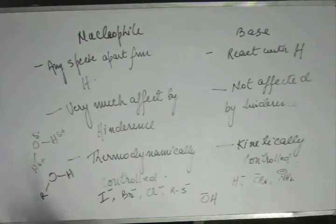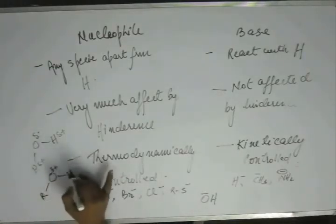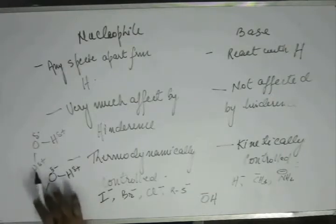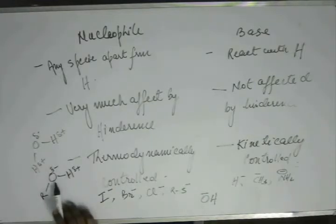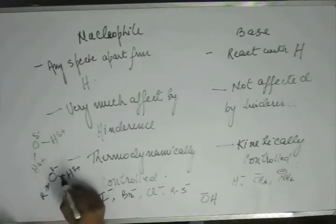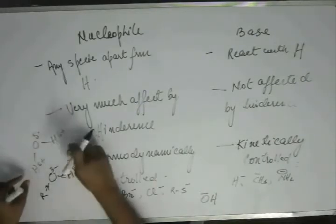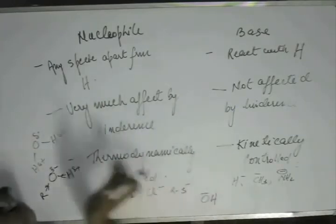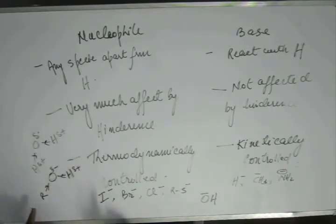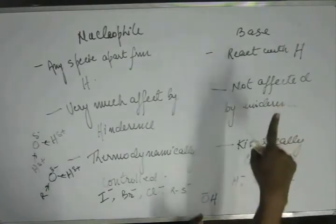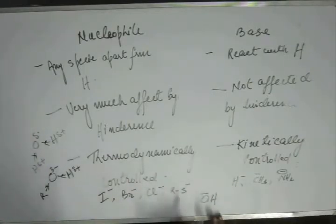In water, oxygen abstracts electron density from both small hydrogen atoms, making it a fairly polar solvent. In alcohol, the R alkyl group restricts that, so alcohols are less polar than water. Therefore: less polar solvent → less solvation → less stabilization → base. More polar solvent → more solvation → more stabilization → nucleophile.